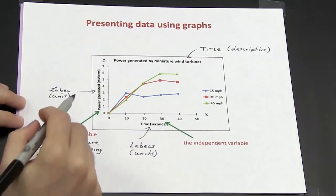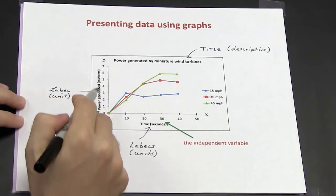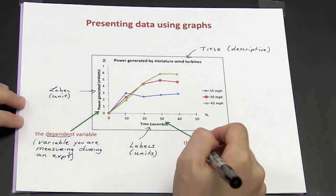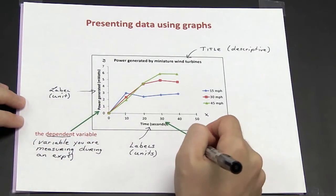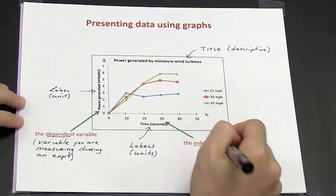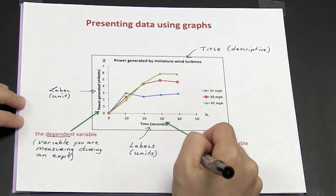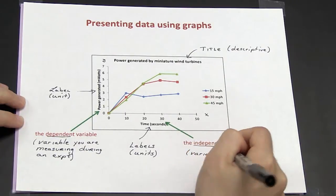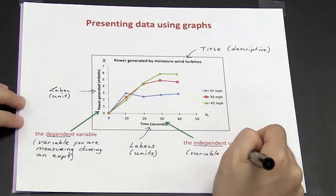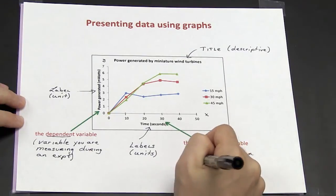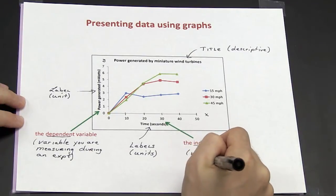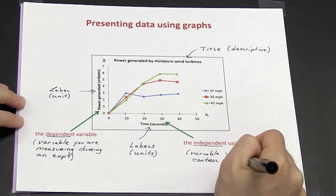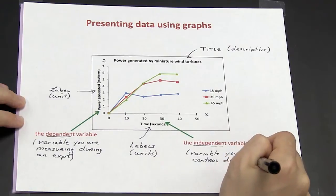The dependent variable goes along the y-axis. For the x-axis, the x-axis is the independent variable — that is the variable you can control during an experiment.